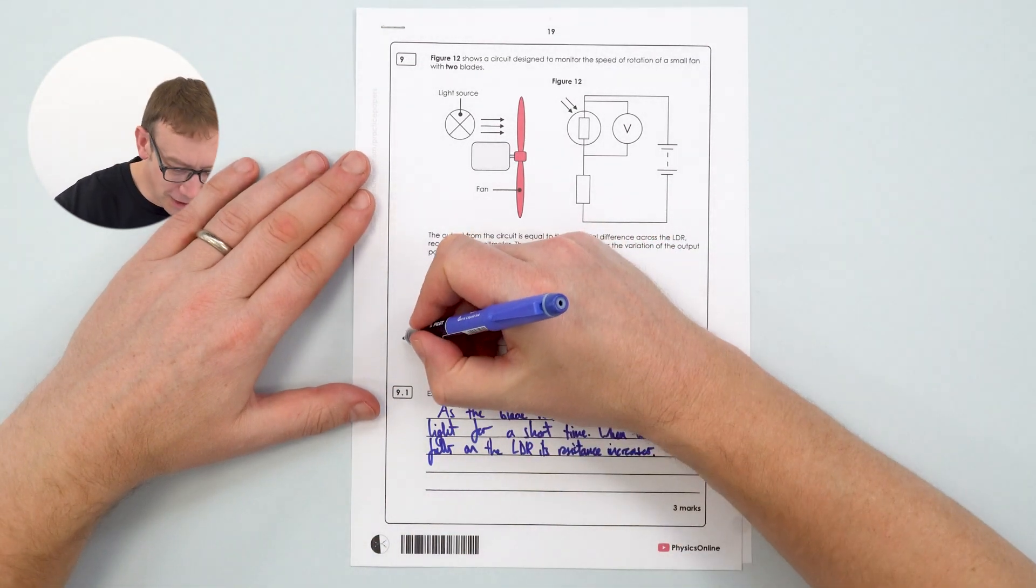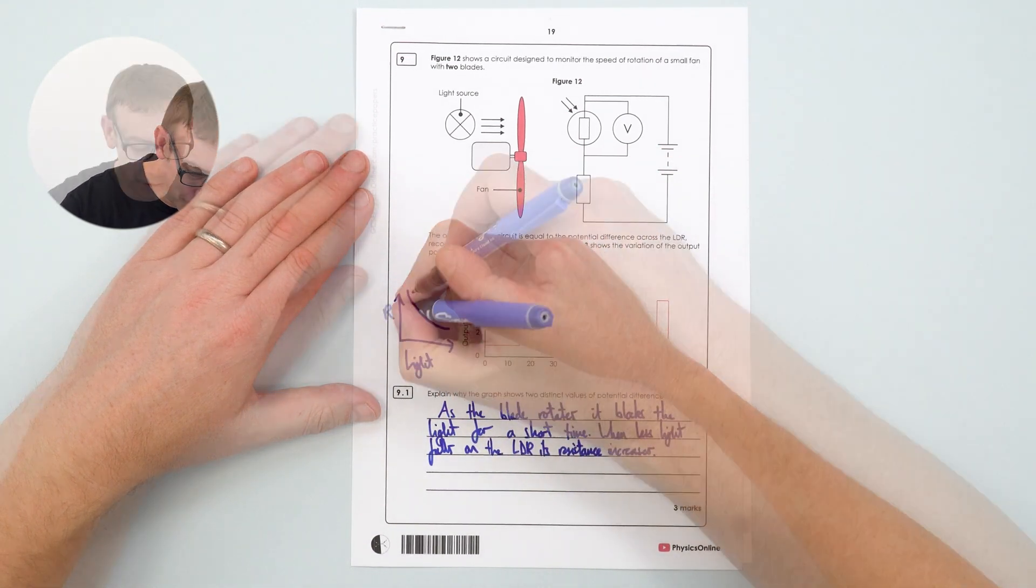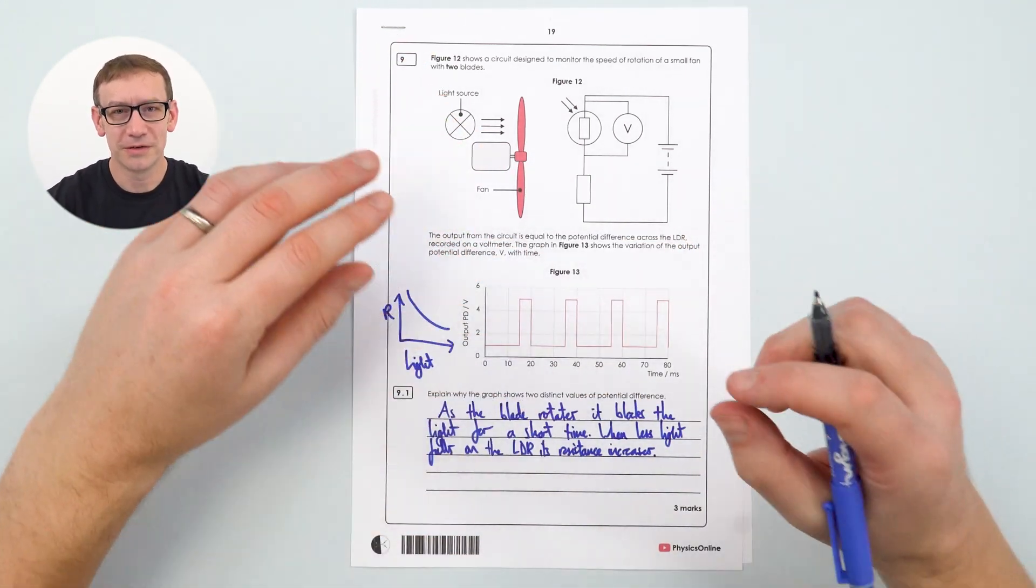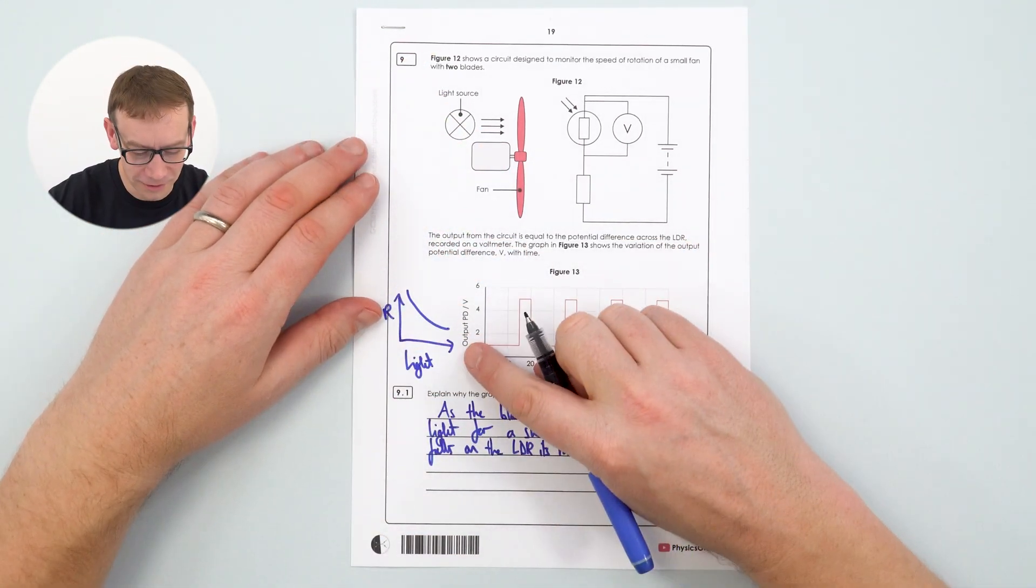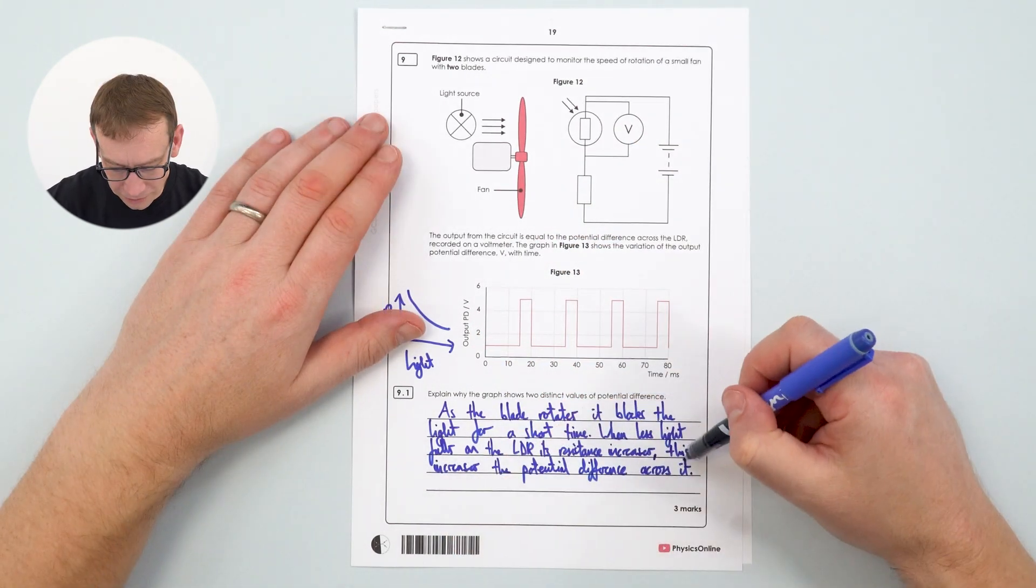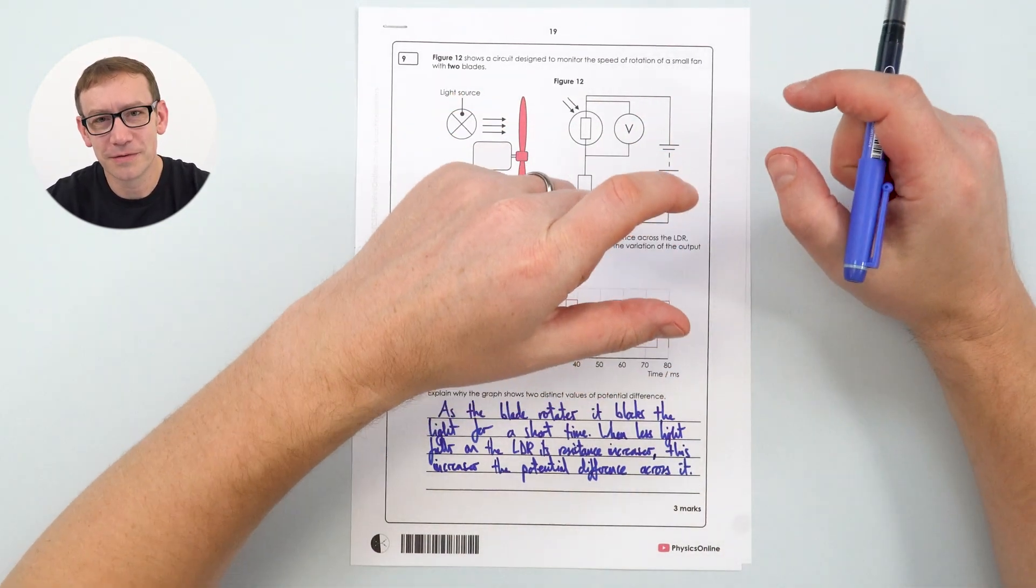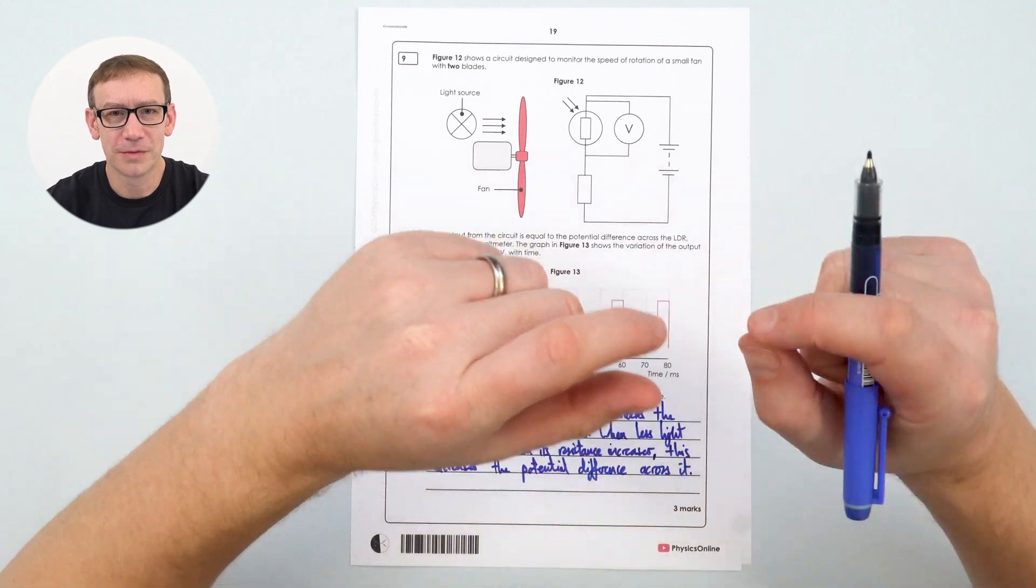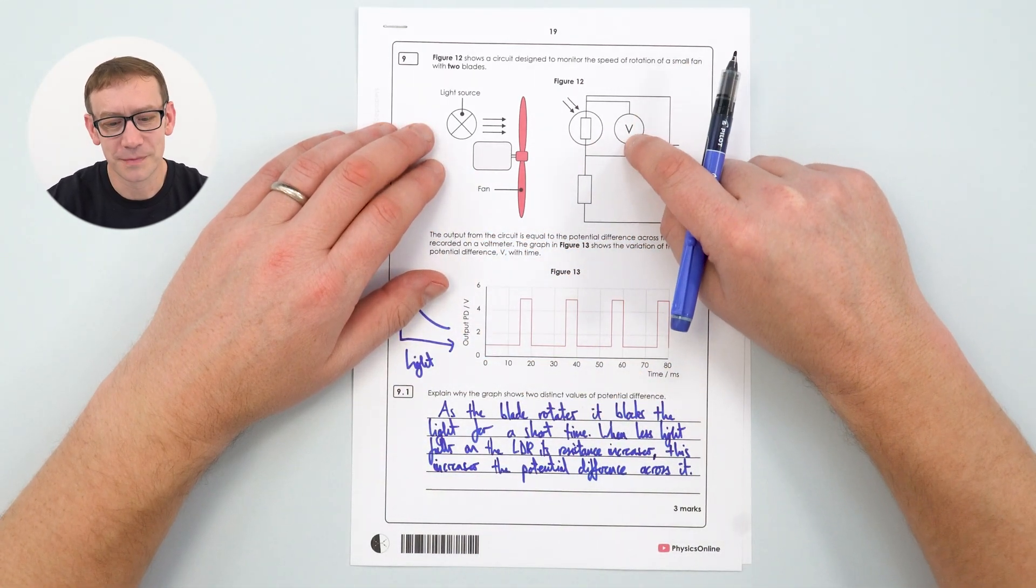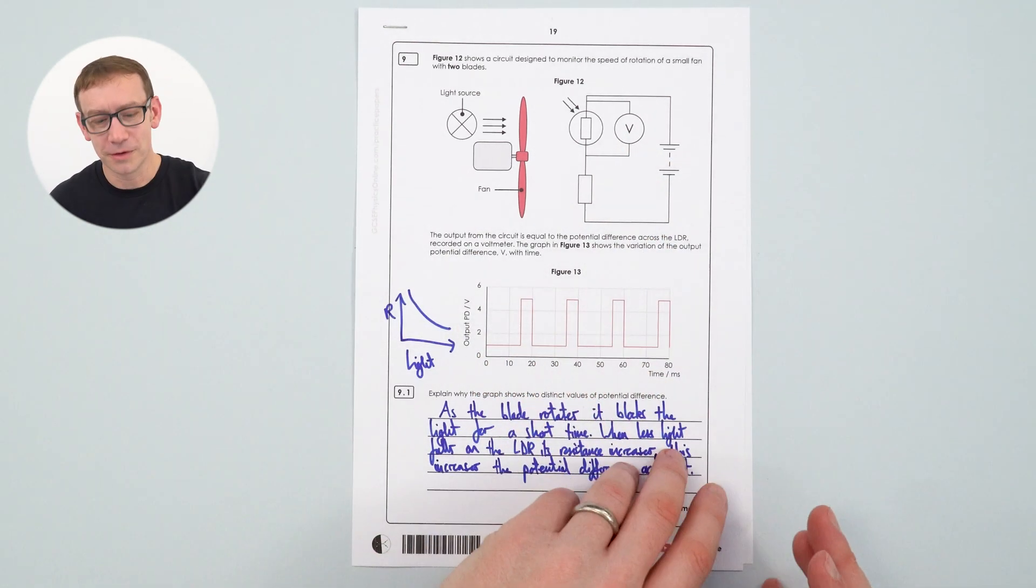Now you might remember that there's a graph where if we were to look at the resistance and we looked at the light intensity we'd see a shape that looks a bit like this. Effectively as you shine more light on it the resistance of that electrical component decreases. So when there's more light we're going to have a lower resistance. And this increases the potential difference across it. And that's because in this circuit here the potential difference across that component is directly proportional to the resistance of that component. When it's got a higher resistance it's going to have a greater PD. So that's the reason that we have this changing value on the graph.